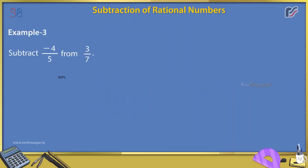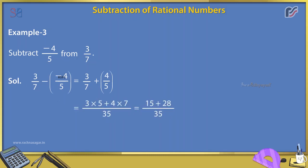Example 3: Subtract -4/5 from 3/7. Solution: 3/7 - (-4/5) = 3/7 + 4/5 = (3 × 5 + 4 × 7)/35 = (15 + 28)/35 = 43/35 = 1 and 8/35.